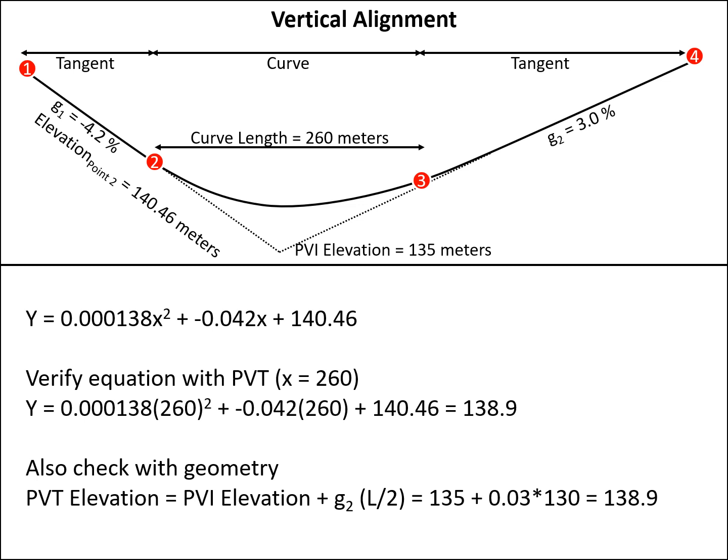We can also check this with geometry. So the PVT elevation is the PVI elevation plus G2 times half the length. This equals 135 plus 0.03 times 130, which also gives us an elevation of 138.9 for the PVT. So this allows us to check our equation and confirm that it is working correctly.